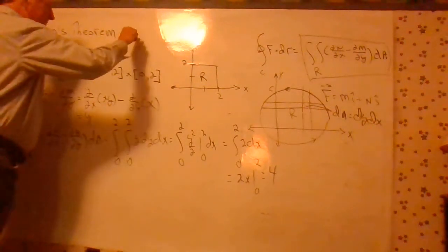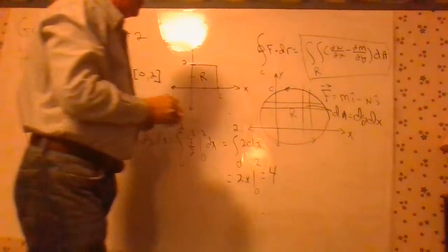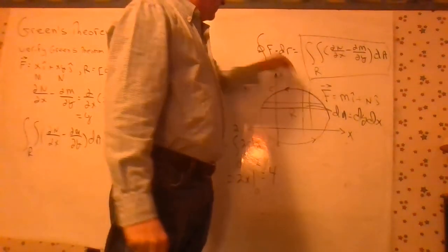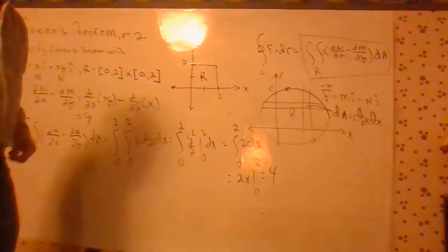Green's Theorem Part 2. We're going to evaluate this side of Green's Theorem. Part 1, we did this path integral. We went around here and covered clockwise. We got an answer of 4.